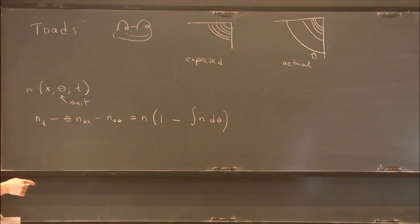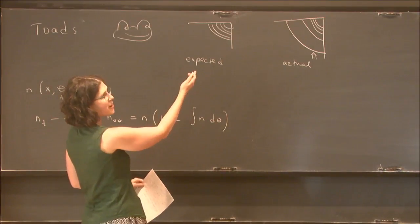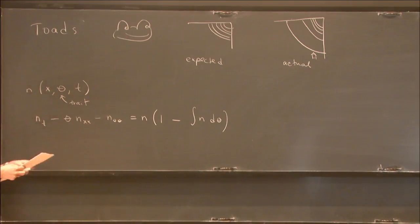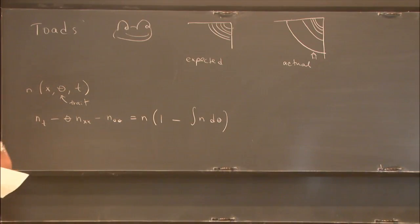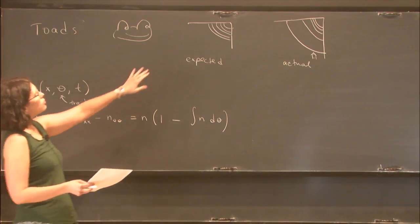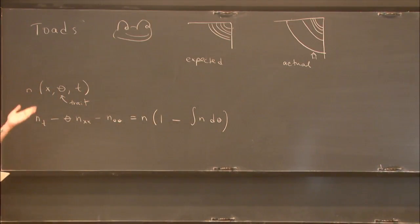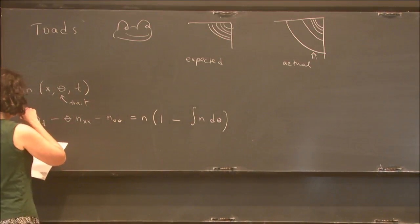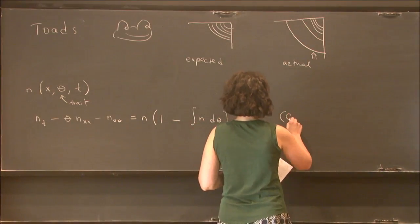This is a reaction-diffusion equation: here is diffusion, here is reaction, and we see the non-local term. We can think of this as a minimal model for what the ecologists observed. In particular, in a classical reaction-diffusion equation you get a constant rate of spreading — but in this one, can we see accelerated spreading? That would give some justification to the ecologists' theories. I'll call this the Kane-Toads equation.